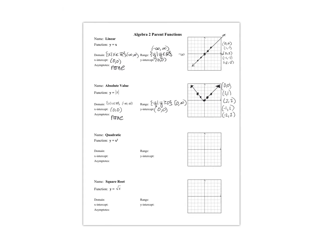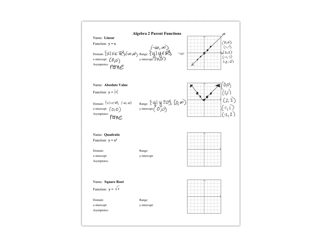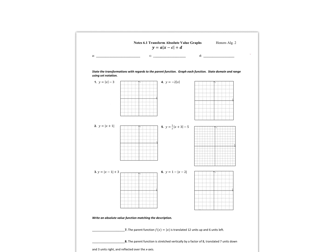This is all we're going to cover right now on the parent function notes. We're going to do the rest of these as the course progresses, so don't lose this paper. In 6.1, we're going to transform absolute value graphs. This is the generic formula for transformations — you can notice that there's x and y like you're used to, but now there's a, c, and d, and those values and their locations will transform the graph in different ways.